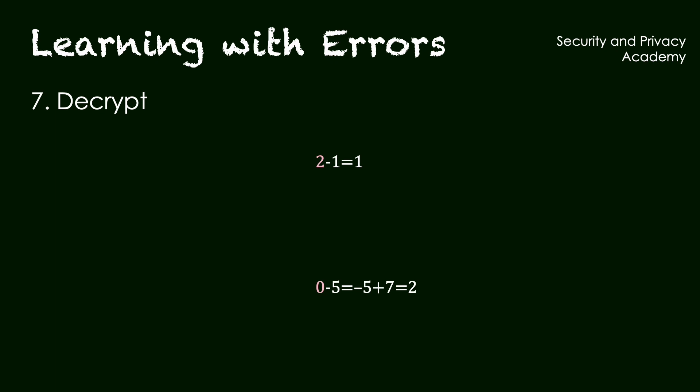The result can now be interpreted as follows. If the value we come up with is closer to 0 than to the half of the modulo rounded down, the encrypted bit was a 0. Otherwise, as we see in the example below, it was a 1. This is exactly what we had previously. Thank god.